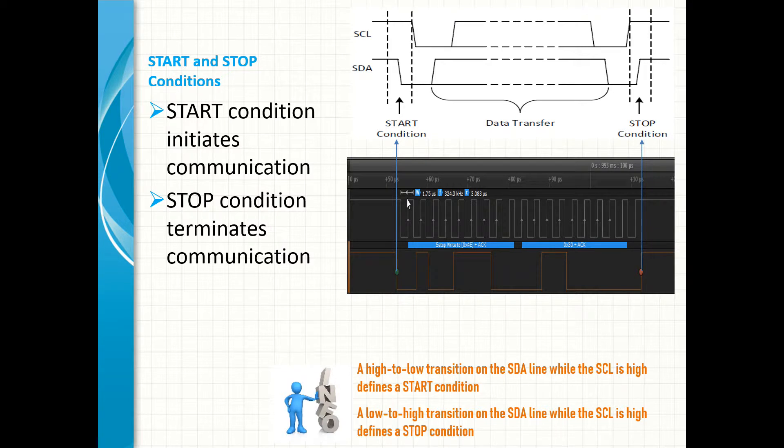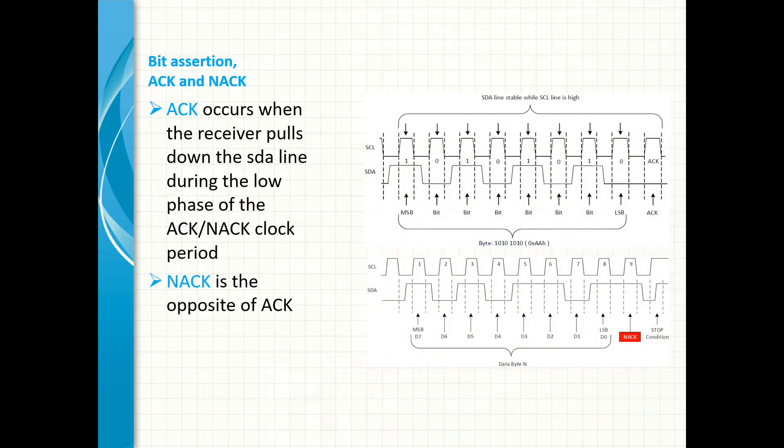Start and stop signals are needed for every communication. The start condition on the bus is a high-to-low transition on the SDA line when the SCL line is high. A stop condition is a low-to-high transition on the SDA line when the SCL line is high. Each bit on the SDA line is asserted when the SCL changes from low to high.